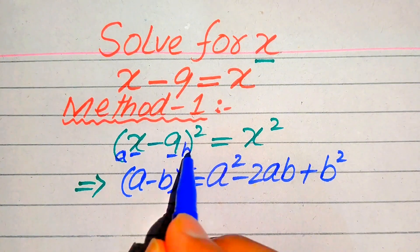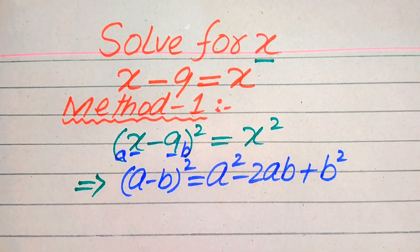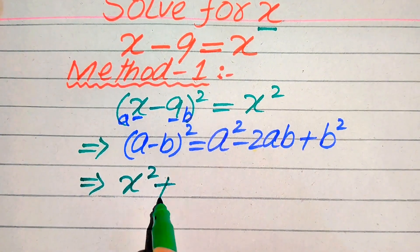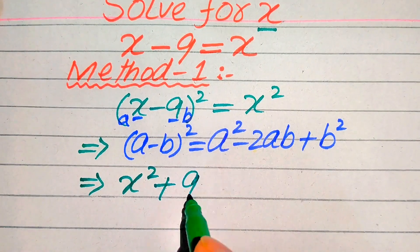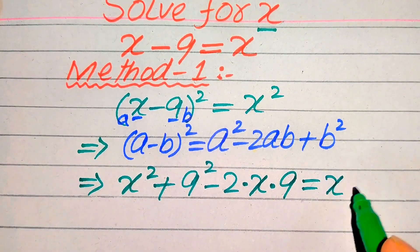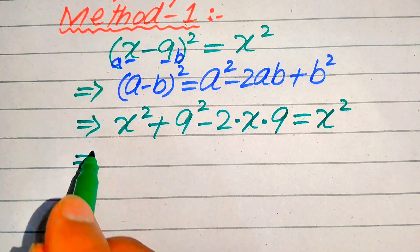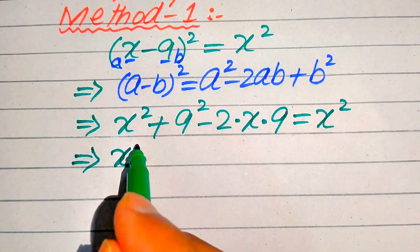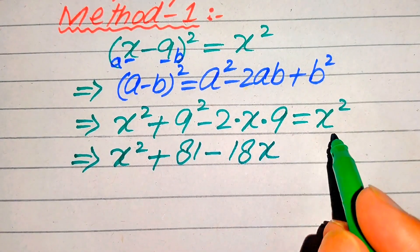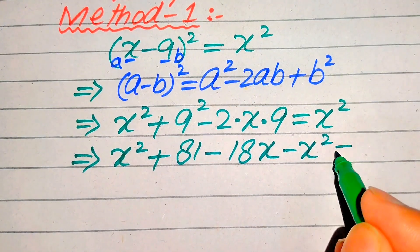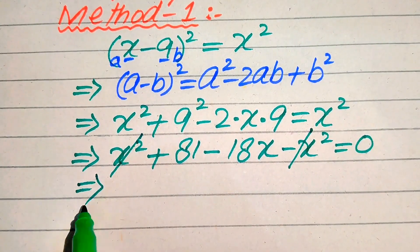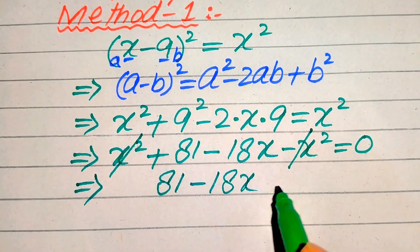Here this is the value of a and this is the value of b. According to this formula we write our above equation in this form. We have a squared where a is x squared, and this is negative sign. We write plus b squared, so b is 9 squared, minus 2 times of a times b, so a equals x and b equals 9, and this equals x squared. Now x squared plus 81 minus 18x plus x squared becomes minus x squared, and this whole equation equals to 0. You see the x squared terms cancel and you get 81 minus 18x equals to 0.